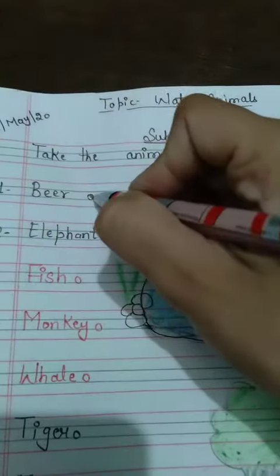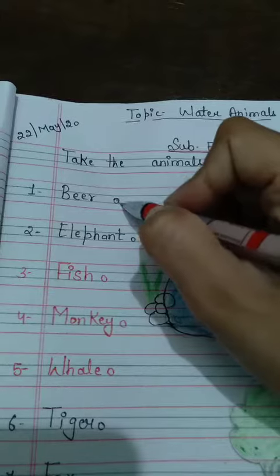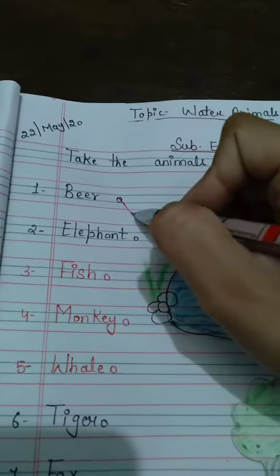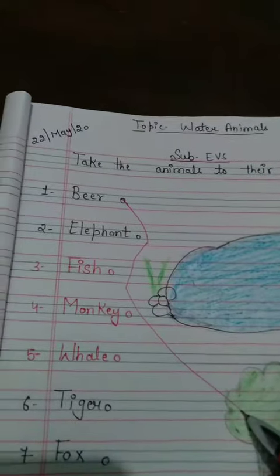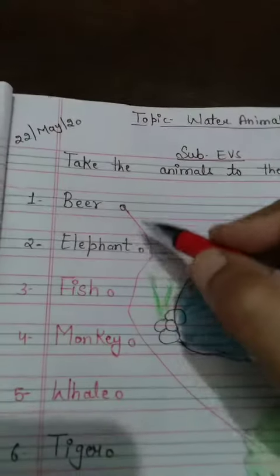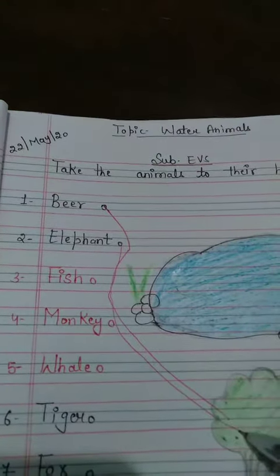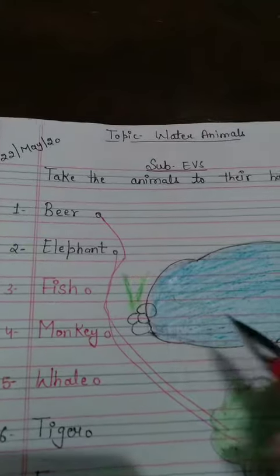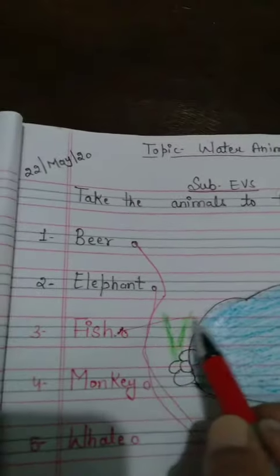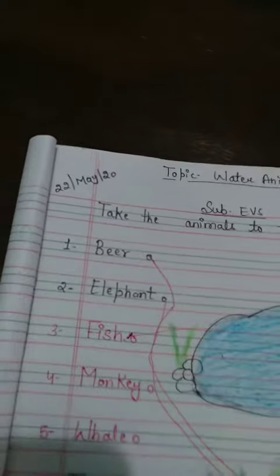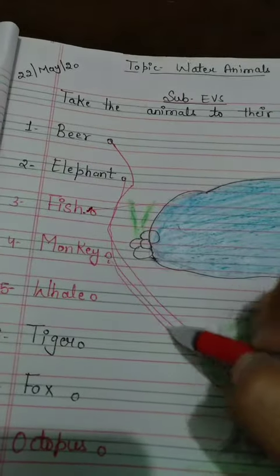Point your pencil and match bear with the trees. Next is elephant — match elephant with the trees as well. Where is fish? Fish lives in the pond. Where does monkey live? Monkey lives in trees.